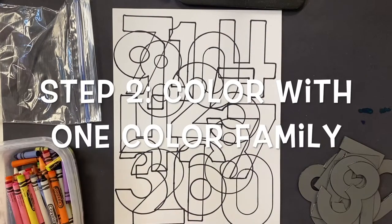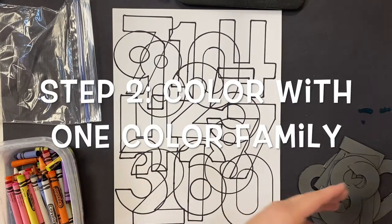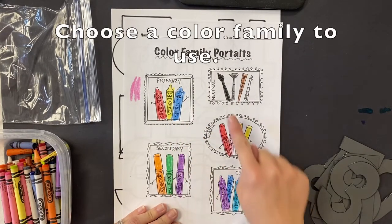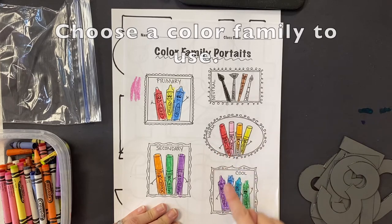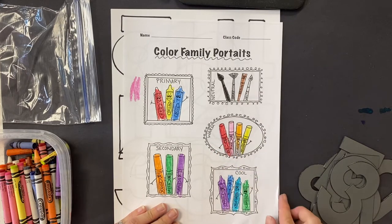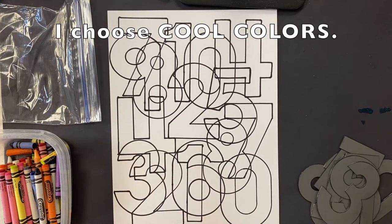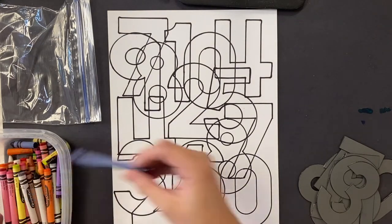Our next step is to color in our picture with one color family. You need to choose either primary colors, secondary colors, neutral colors, warm colors, or cool colors. I choose cool colors. We're going to use crayons because there's more colors to choose from.